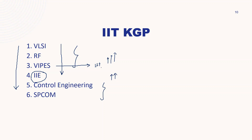This might be a mistake of choice filling. The student put IIE at the fourth position and is expecting to get IIE. The problem is: if you got any offer above IIE in your preference list, you cannot get IIE again, because the system only moves you upward, not downward. So this may be a consequence of incorrect choice filling.